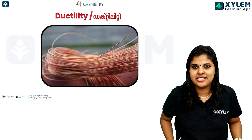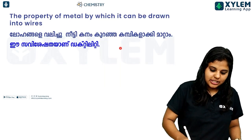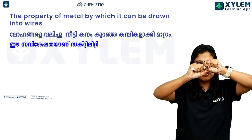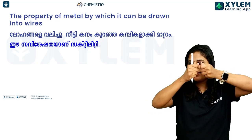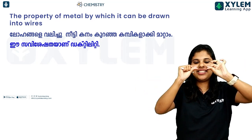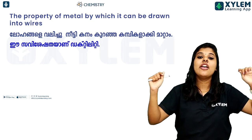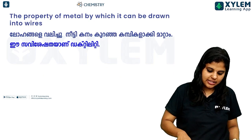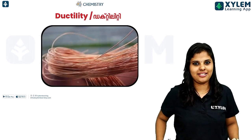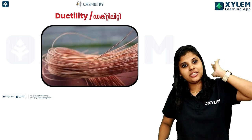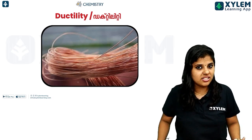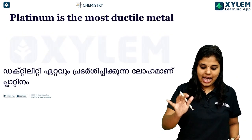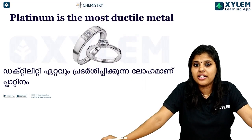The property is ductility — the property of a metal by which it can be drawn into wires. We can use wires, and the property shown by copper wire is ductility.